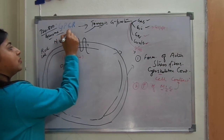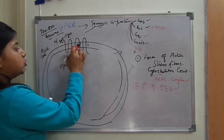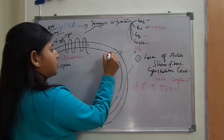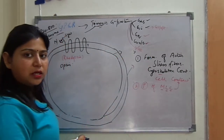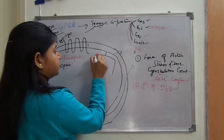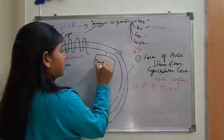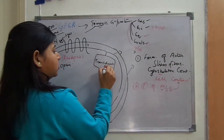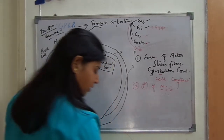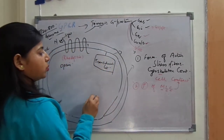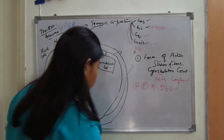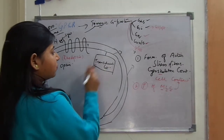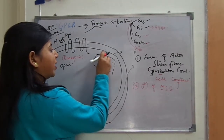The signal here is a light signal. When this light signal is absorbed by the rhodopsin protein, it activates a trimeric G-protein known as GT — transducin. Activation of this transducin protein converts GDP to GTP, which binds to the alpha subunit.